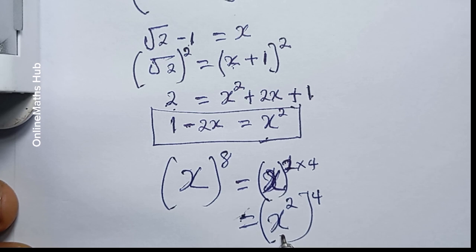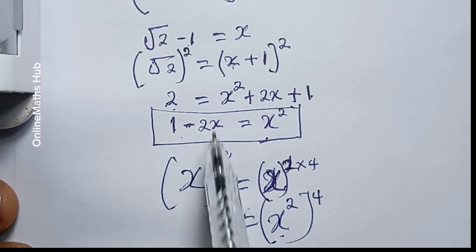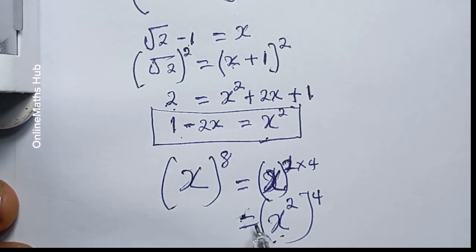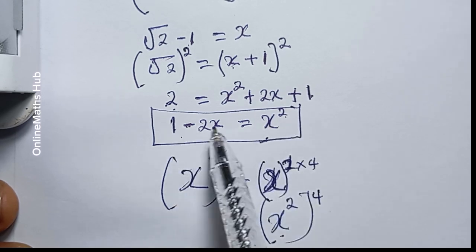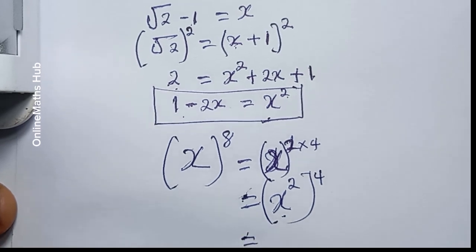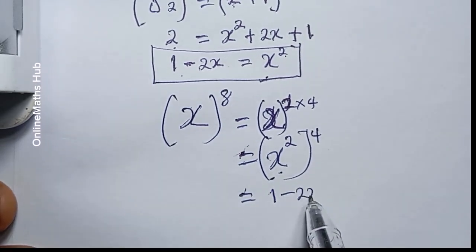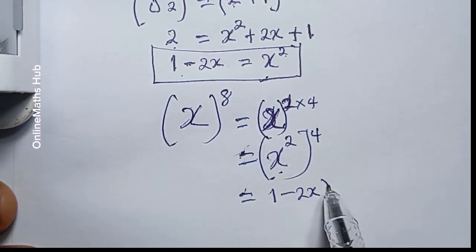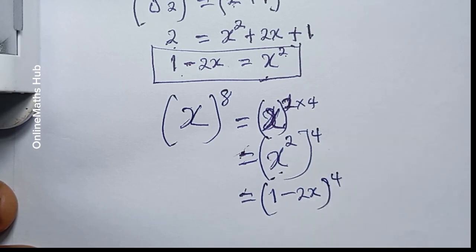I can now replace x squared with 1 minus 2x, so what I'm going to have is 1 minus 2x, all raised to power 4.